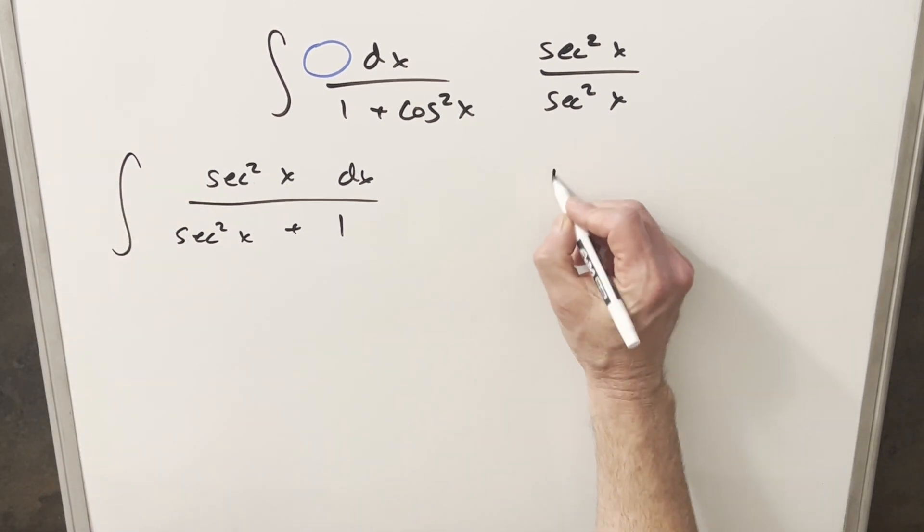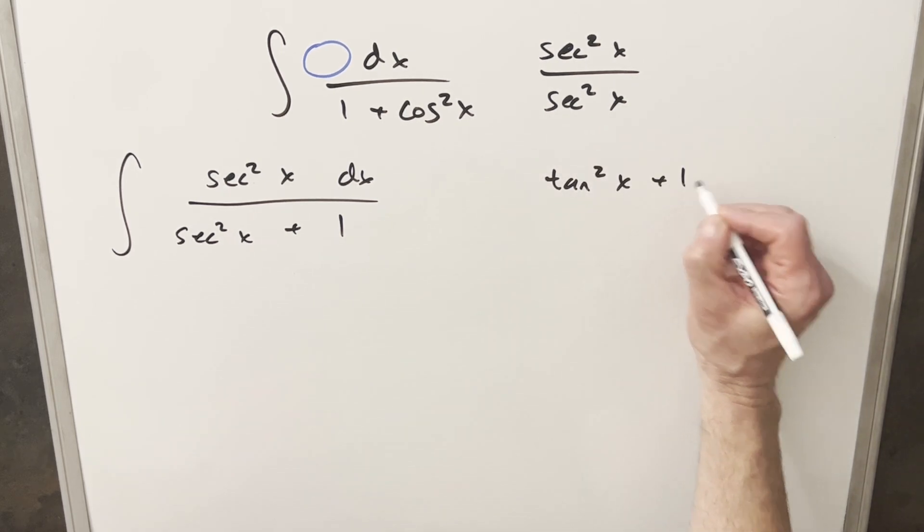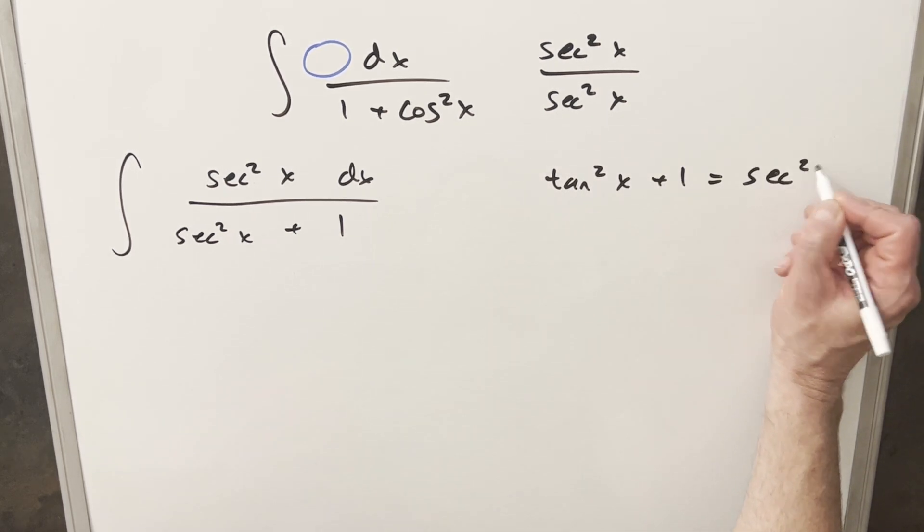Well, we have an identity we can use for this. We have tan squared x plus 1 equals secant squared x.